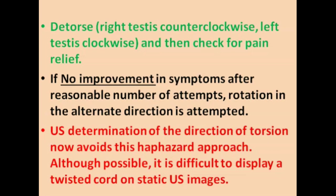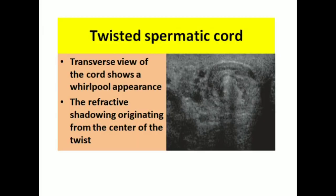Although possible, it is difficult to display a twisted cord on static ultrasound images. This image shows a twisted spermatic cord with a whirlpool appearance, and refractive shadowing is also present.